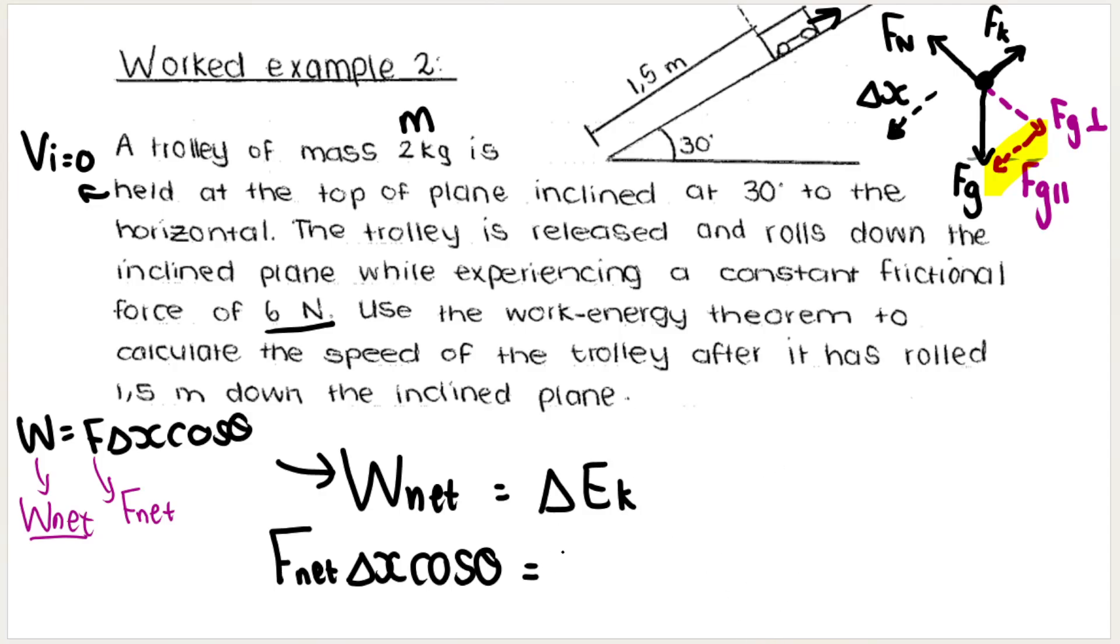Which, as you should know, is ½ m vf² minus ½ m vi². Remember, change is always final minus initial. So our first important thing to do: we've drawn our free body diagram, we've looked at what we have. I need to find Fnet, and to find Fnet I will be making use of my free body diagram.